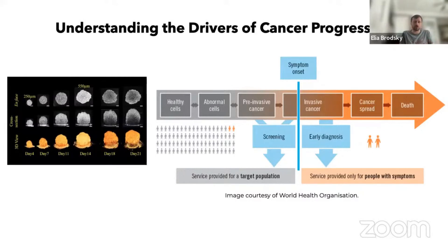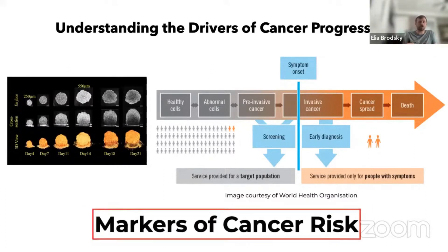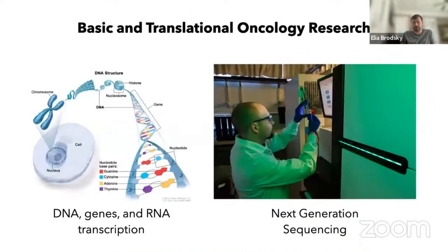To address this problem and really treat cancer, a critical part is screening and identifying at-risk populations, and then within those populations identifying the onset of cancer. What people have been doing at the biological level is identifying markers of cancer risk and translating those markers into strategies for screening and early diagnosis. A lot of that relies on modern technologies like next generation sequencing, which allows us to monitor several different critical molecular processes inside tissues and cells.